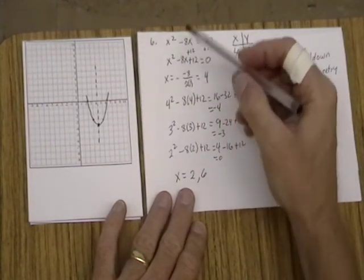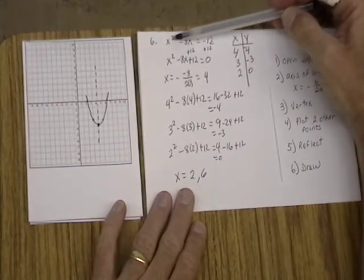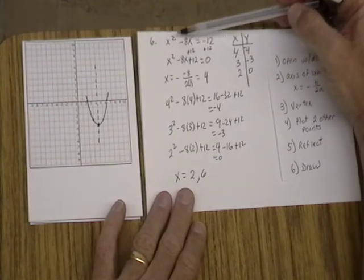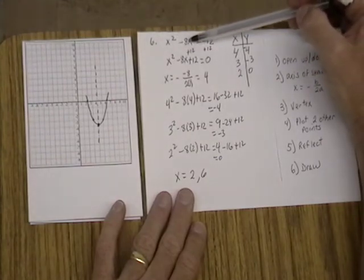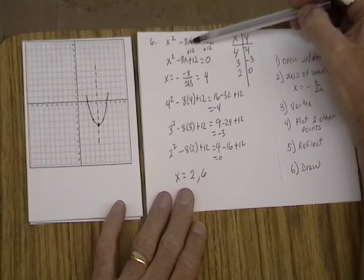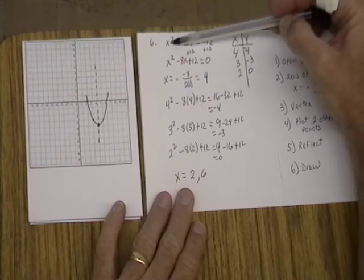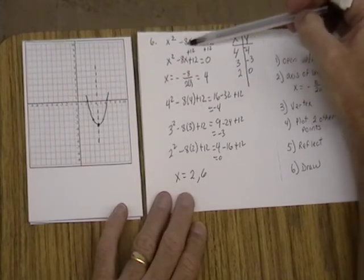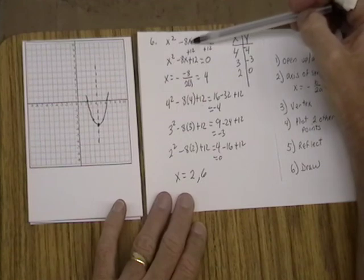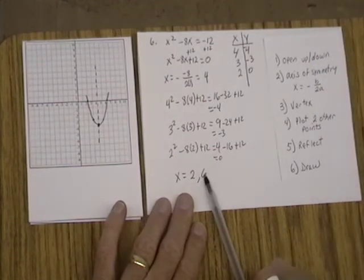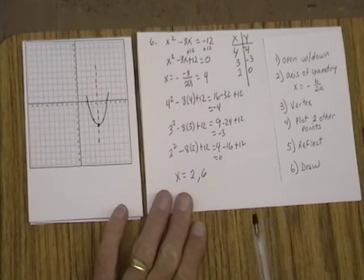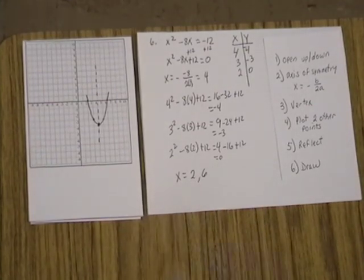We're going to find that if we go 6 squared is 36 minus 8 times 6 which is 48. So 36 minus 48 is negative 12. And so negative 12 equals negative 12. So 6 does make this equation true. That's your solution.